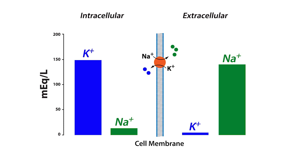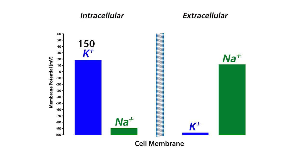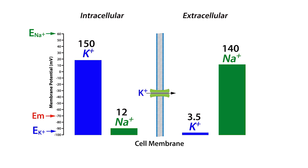Also, these concentration differences play a central role in establishing the resting membrane potential. For example, an intracellular and extracellular potassium concentration of 150 and 3.5 mEq per liter yields an equilibrium potential of minus 95 mV, while an intracellular and extracellular sodium concentration of 12 and 140 mEq per liter, respectively, yields an equilibrium potential of plus 60 mV for sodium. However, because the cell membrane is mostly permeable to potassium, as denoted by the presence of this potassium ion channel, the resting membrane potential for most cells is approximately minus 70 mV, which is closer to the potassium equilibrium potential.